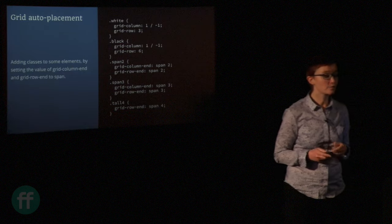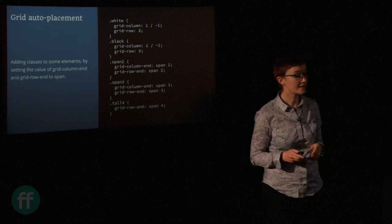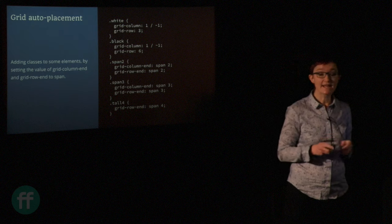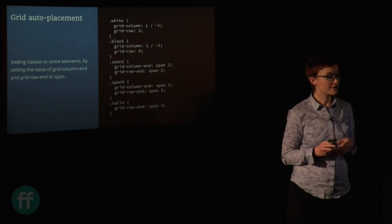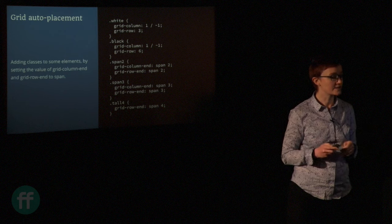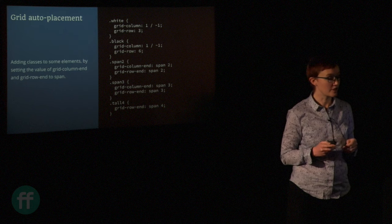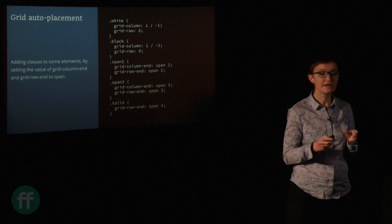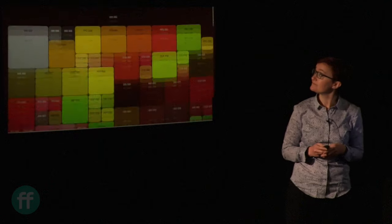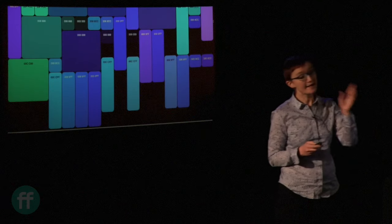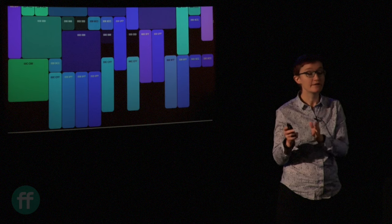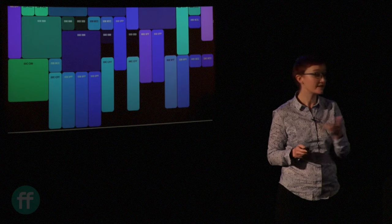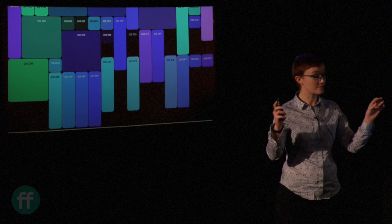I added classes to make white and black blocks spread right across the screen — starting at grid column line 1 and ending at -1, which is the far right. I also applied classes to some items to span two or three column tracks, and some spanning multiple row tracks, creating different sized blocks. But then there are some black spaces in the grid. What's happening is grid's auto placement sometimes encounters a block too big to fit at the end of a row, so it moves to the next row — leaving gaps, especially where items stretch right across.